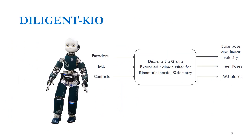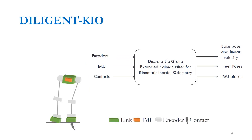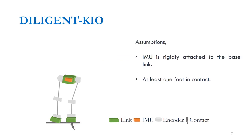In line with previous works, we propose a discrete Lie group extended Kalman filter for kinematic inertial odometry — in short, Diligent KIO. It can be considered as a matrix Lie group based formulation of the previously mentioned flat-foot filter. This method fuses information from encoders, an IMU, and contact sensors to estimate the base pose and linear velocity along with feet poses and IMU biases, while assuming the IMU is rigidly attached to the base link and at least one foot is in contact at all times.